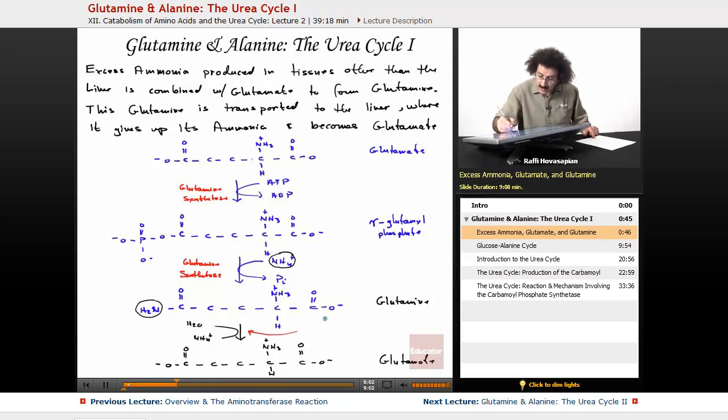The enzyme for that is glutaminase, however you want to pronounce it. So that is what happens with glutamine. The excess ammonia from other tissues in the body is tied up as glutamine by using glutamate. Glutamate to glutamine, glutamine to the liver. Glutamine gives up this ammonia that gets processed, that's going to actually enter the urea cycle, and turns into glutamate. So glutamate is the central molecule of amino acid metabolism.